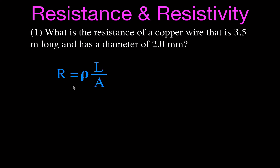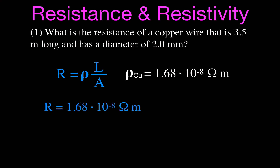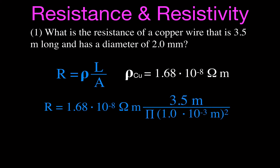Here is a simple problem. What is the resistance of a copper wire that is 3.5 meters long and has a diameter of 2 millimeters? When talking about wire, we usually refer to the diameter, but we need to convert that to area in meters squared because the resistance formula requires the cross-sectional area. Copper has a resistivity of 1.68 × 10⁻⁸ ohm·meters. The area is π r², since a wire has a circular cross-section and the area of a circle is π r².